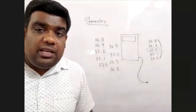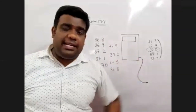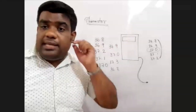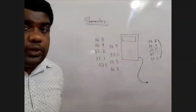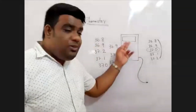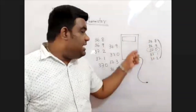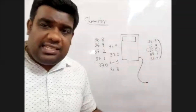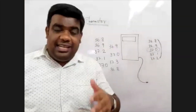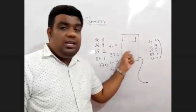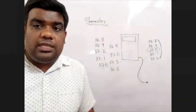So, thermometric properties: the resistance of semiconductors — the resistance changes with temperature. Quick response, but not the highest accuracy. You can do better with platinum resistance. Okay, so this is the thermistor.